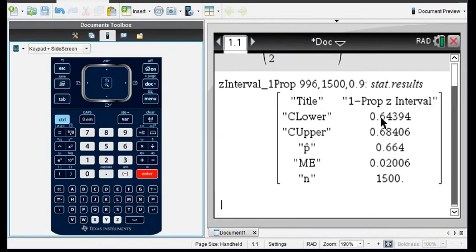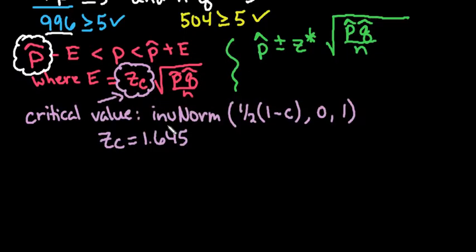And then when I click OK, notice that it gives me my lower limit, the 0.64394, and my upper is 0.68406. It also gives me the p-hat. It gives me the margin of error in this calculator. The margin of error is this E that I was talking about. So it gives you the result of this if you need to show work with that.